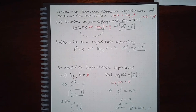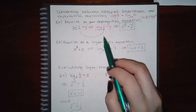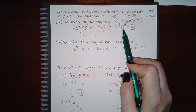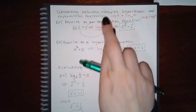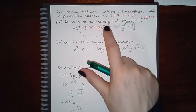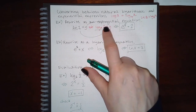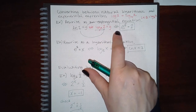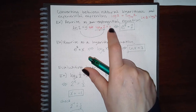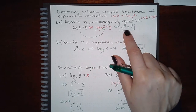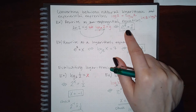Then we rewrite it: the base here is e, which becomes the base of the exponential. The other two numbers switch sides — the y will be with the base e as an exponent, and 2 goes to the right-hand side. So the expression becomes e to the y equals 2.